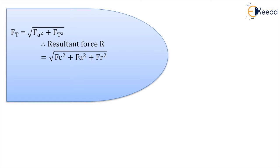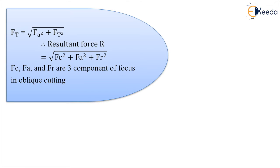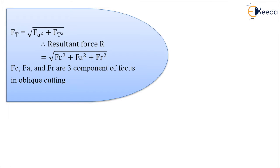A very important thing: we can convert this oblique cutting operation into the orthogonal cutting operation. Any analysis of the oblique cutting operation cannot be carried out directly — first we have to convert this oblique cutting into orthogonal cutting and then proceed with the analysis. So these are the three forces Fc, Fa, and Fr — the three components of forces in oblique cutting operation.